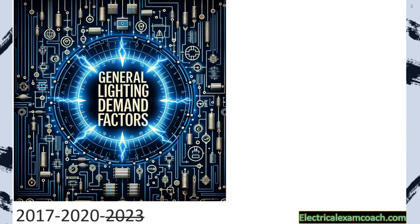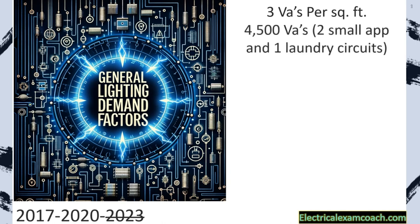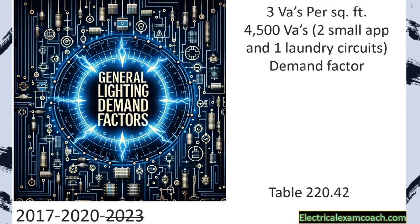Welcome back. I am the Electrical Code Coach from ElectricalExamCoach.com, and this is Lesson 4.2. Now we're going to learn how to apply the demand factor to the general lighting load. At the beginning of the program, we learned it was 3 VAs per square foot with 4,500 VAs added for two small appliance and one laundry circuit. I didn't teach you the demand factor for this earlier because it's complicated without knowing what a demand factor is — but now you're very familiar, so let's head to Table 220.42.